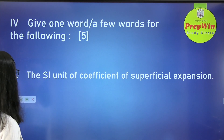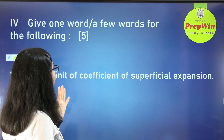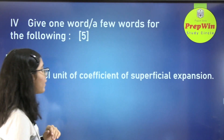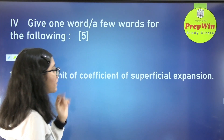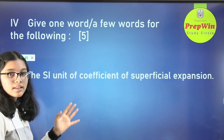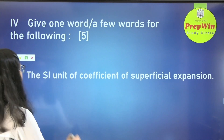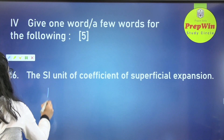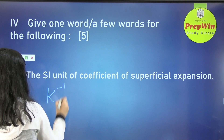Now we have to give one word for the following. The SI unit of coefficient of superficial expansion: superficial expansion is the expansion in area, and the SI unit is per Kelvin.